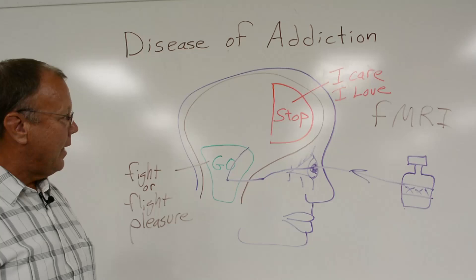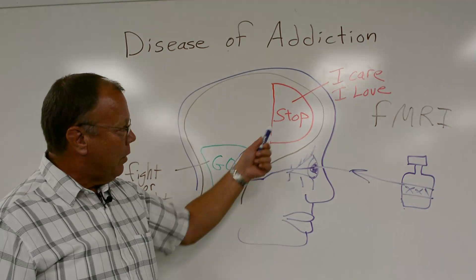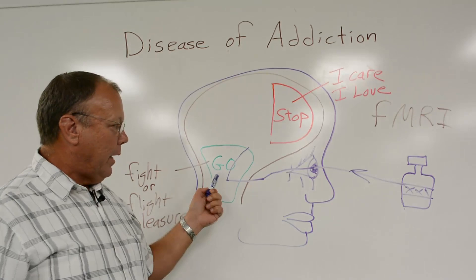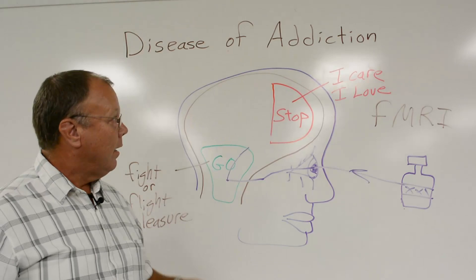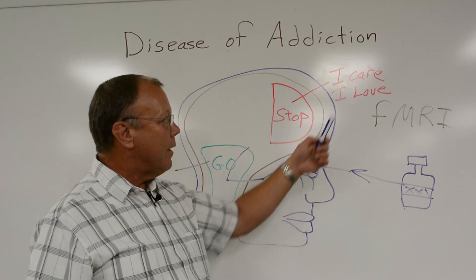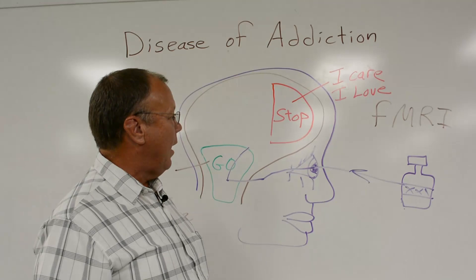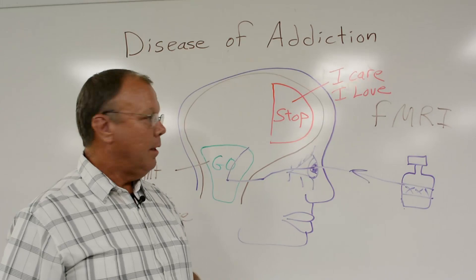So parents, you might ask yourself: why can't my child just stop smoking weed, drinking, or shooting up heroin? It's because their brain doesn't work. For an addict and alcoholic, when they're triggered, it's all go and no stop. They don't care that you spent a hundred thousand dollars on rehab. They don't care that they've taken all of your jewelry, brought it to the pawn shop to get money for drugs — because the part of their brain where they would think about those things is not working.